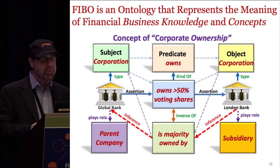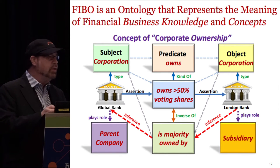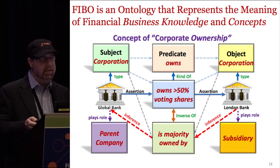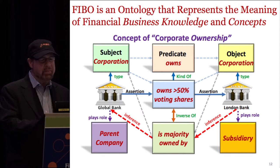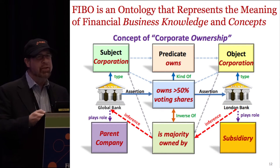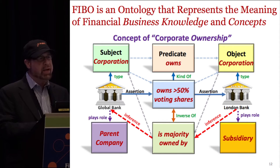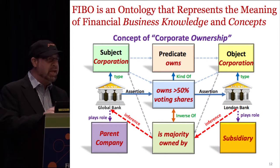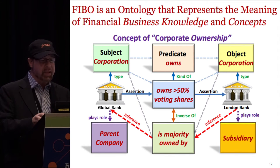Semantic technology defines concepts through the notion of an ontology. An ontology is a way to express concepts — take the example of corporate ownership. The basic elements of an ontology are subjects, predicates, and objects: basic statements that are linguistically aligned with how we think and speak. So 'a corporation owns another corporation' is subject, predicate, object. We can weave in additional concepts into the structure, which we call subclasses or subproperties — for example, 'owns greater than 50% voting shares' is a kind of, or subproperty of, 'owns.'